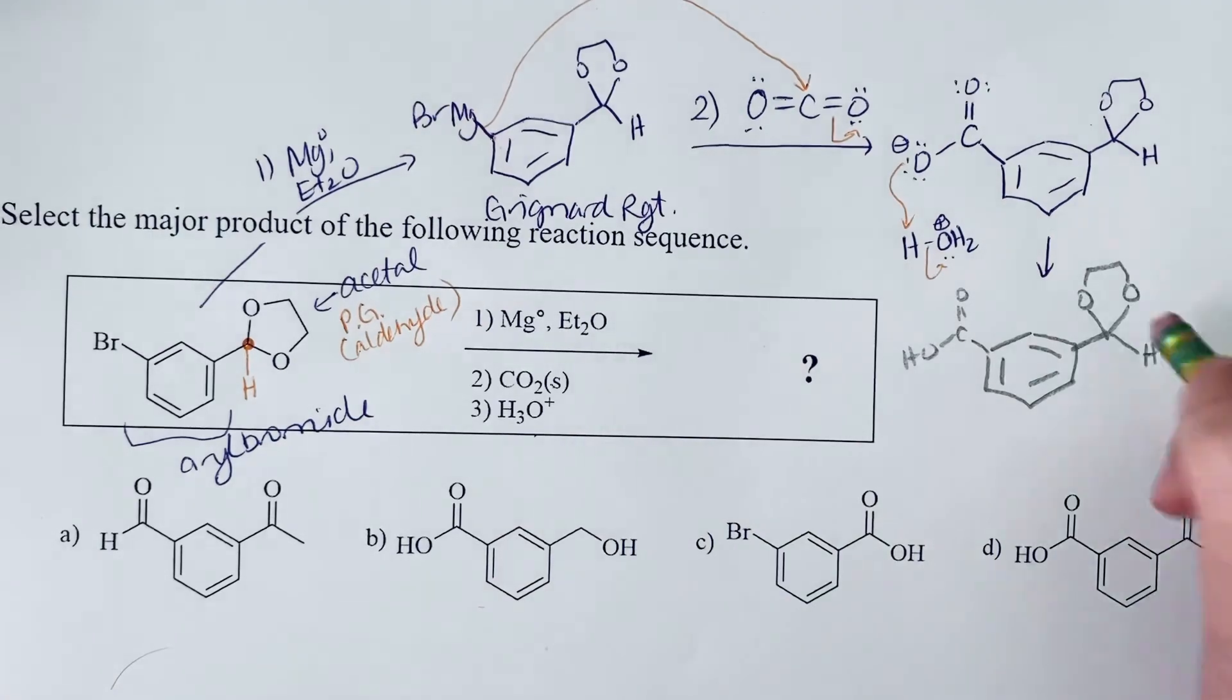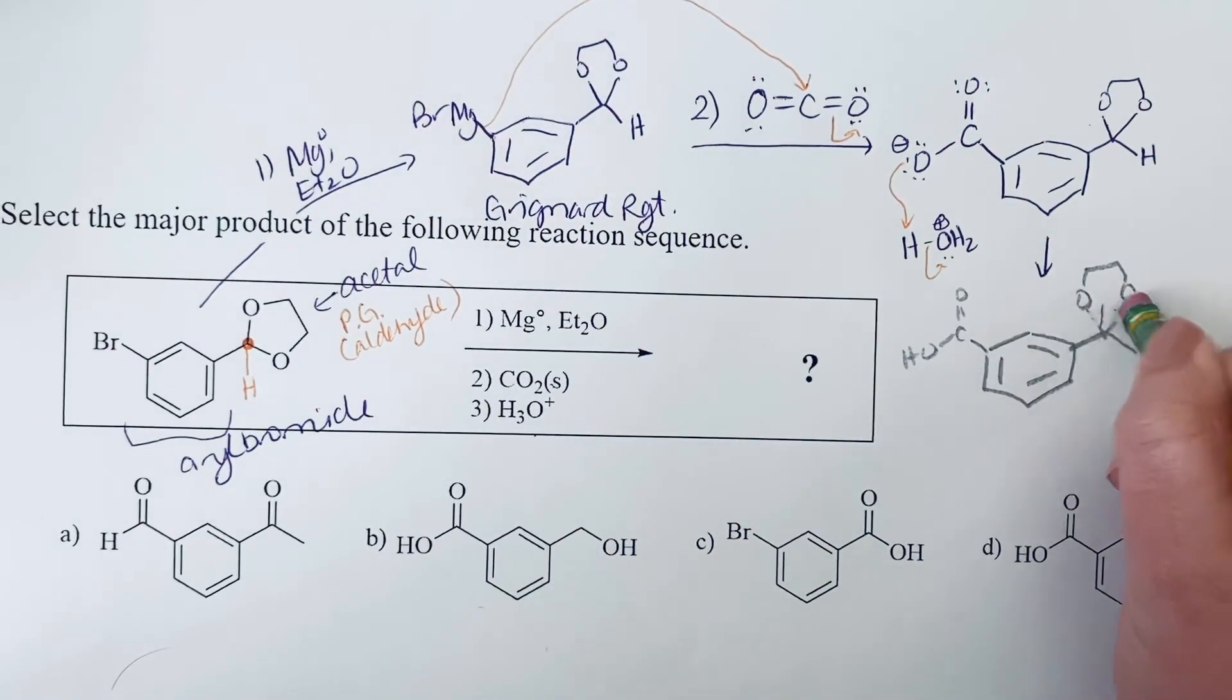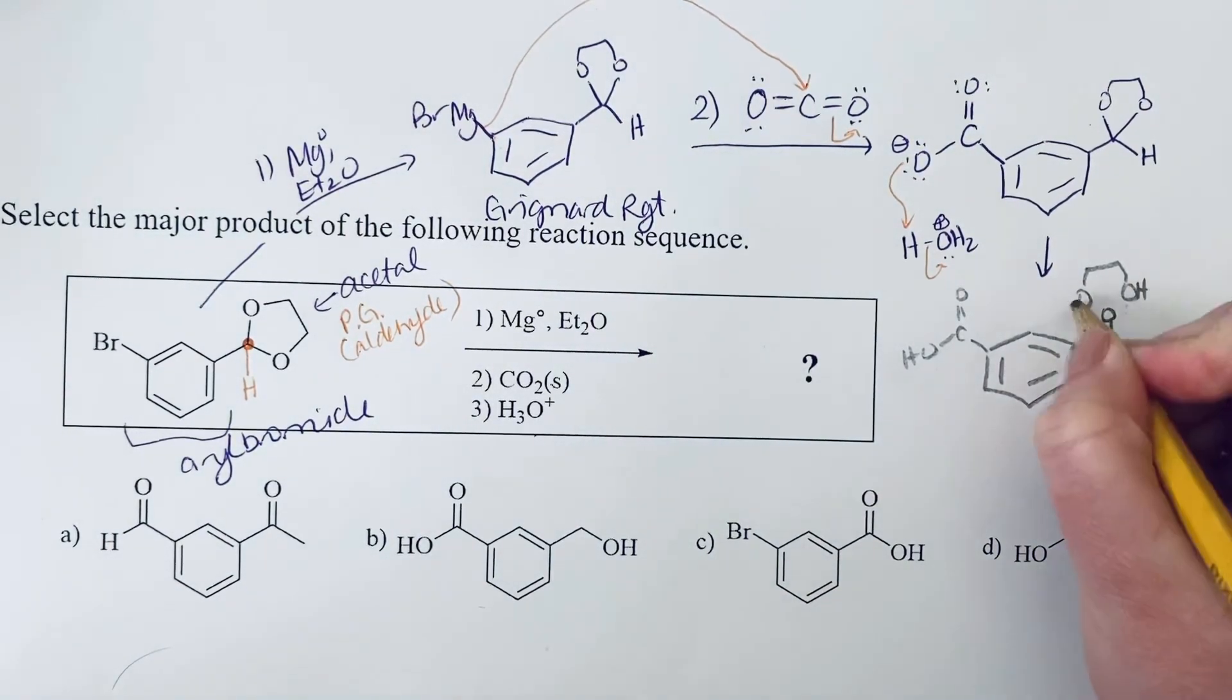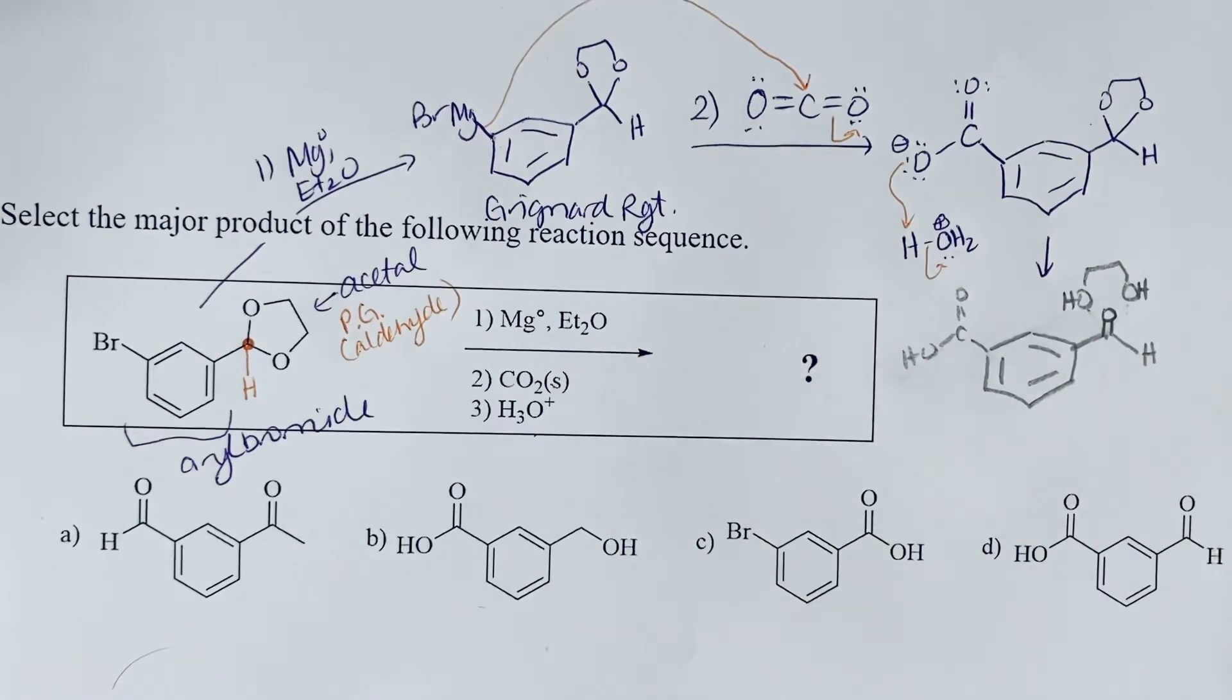So we want to do the hydrolysis here. Recognize that we're cleaving these bonds so that this goes back to being a carbonyl. And this small alcohol or diol would be a byproduct.